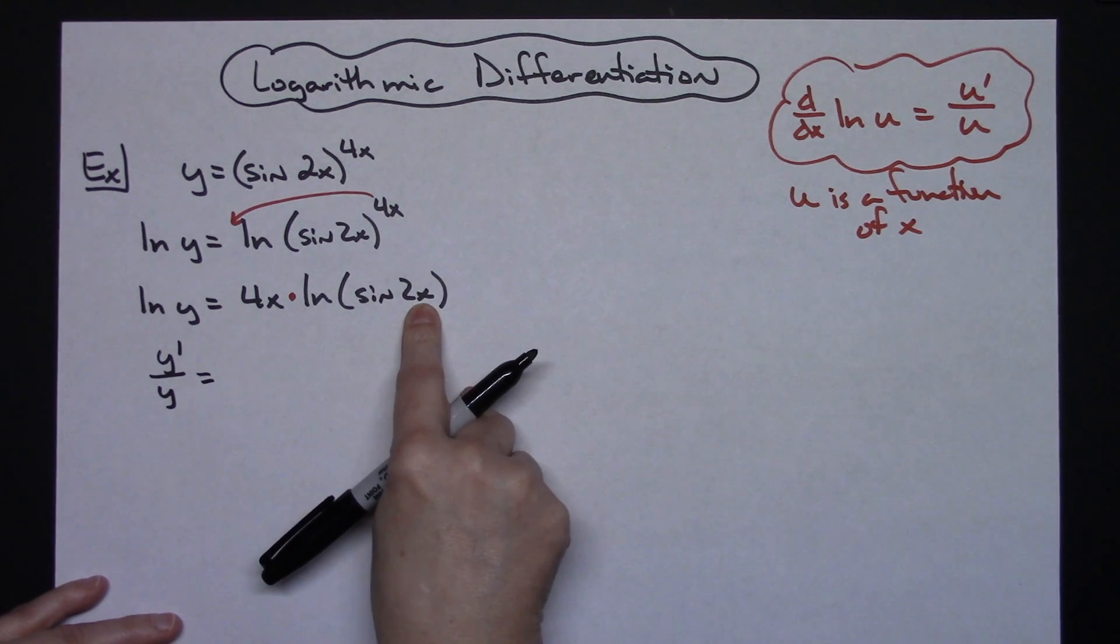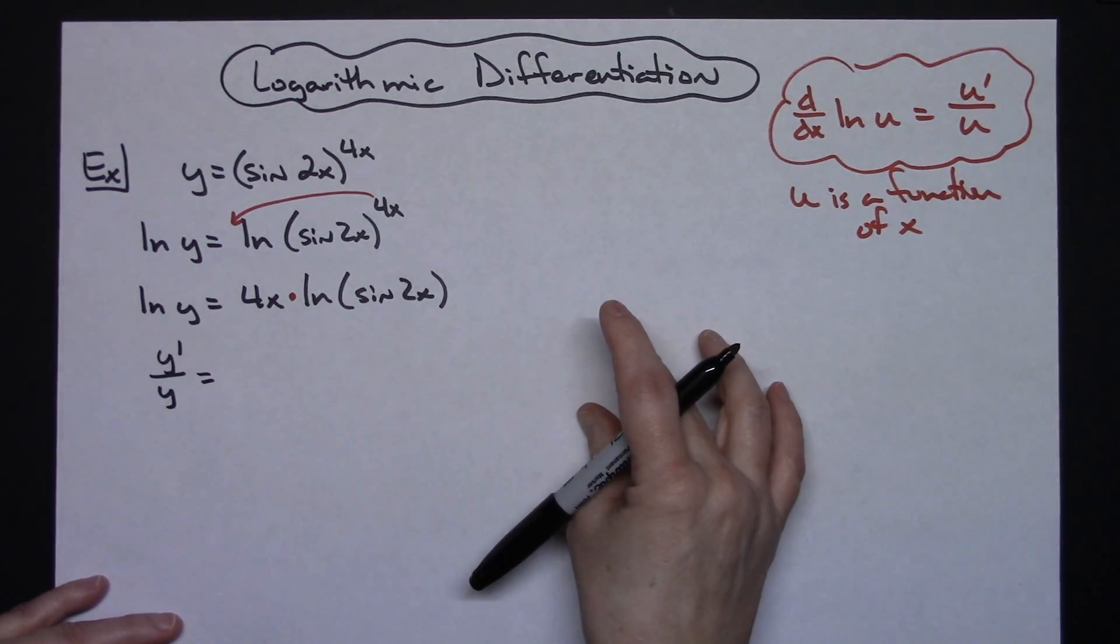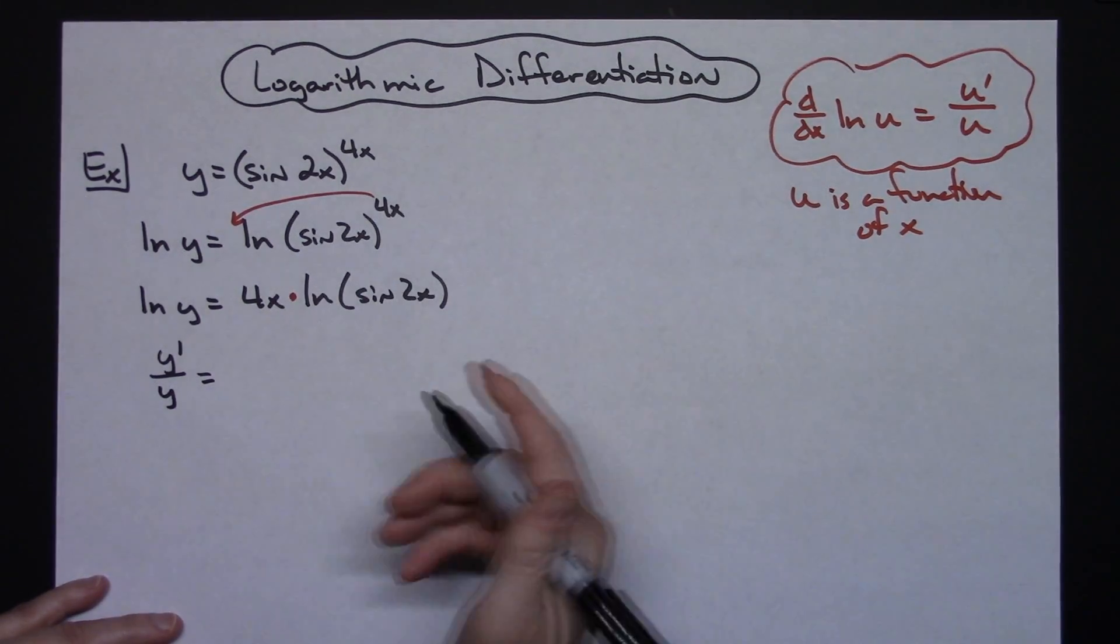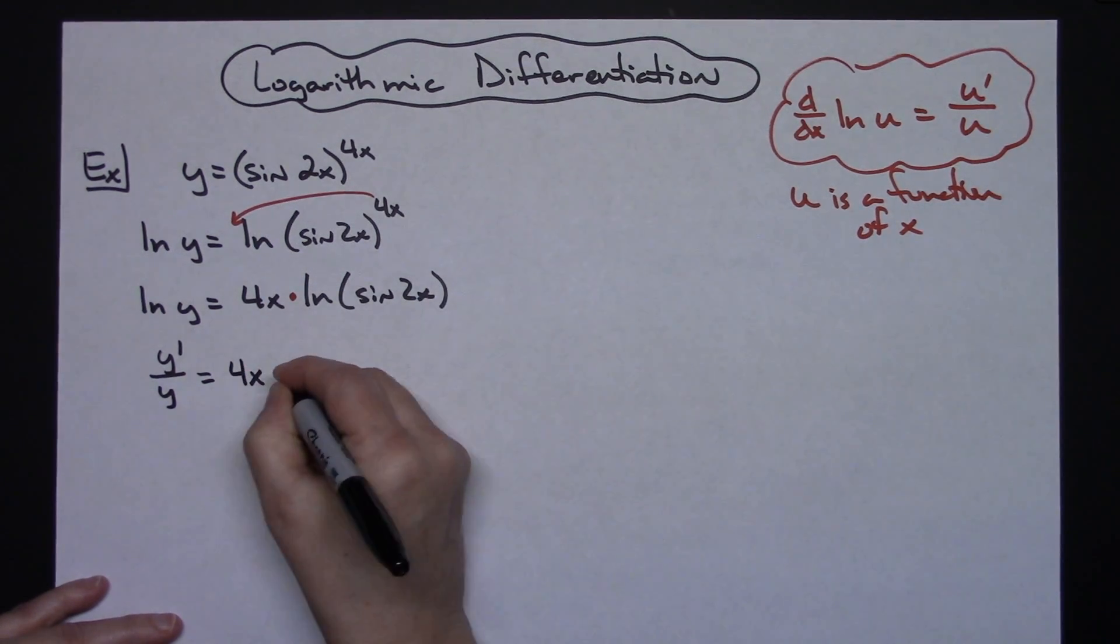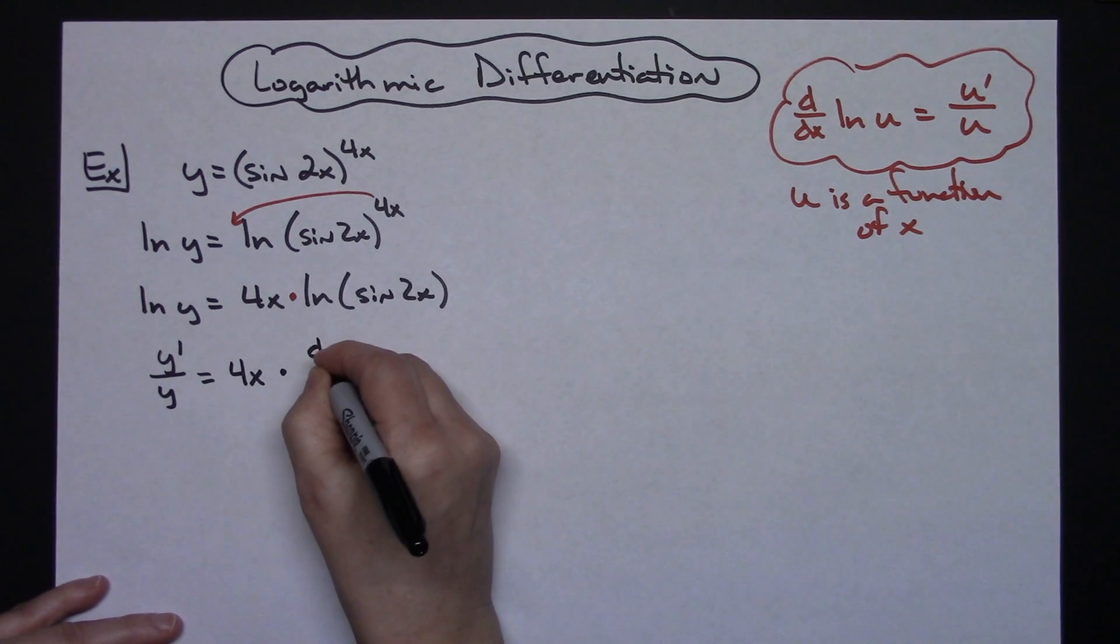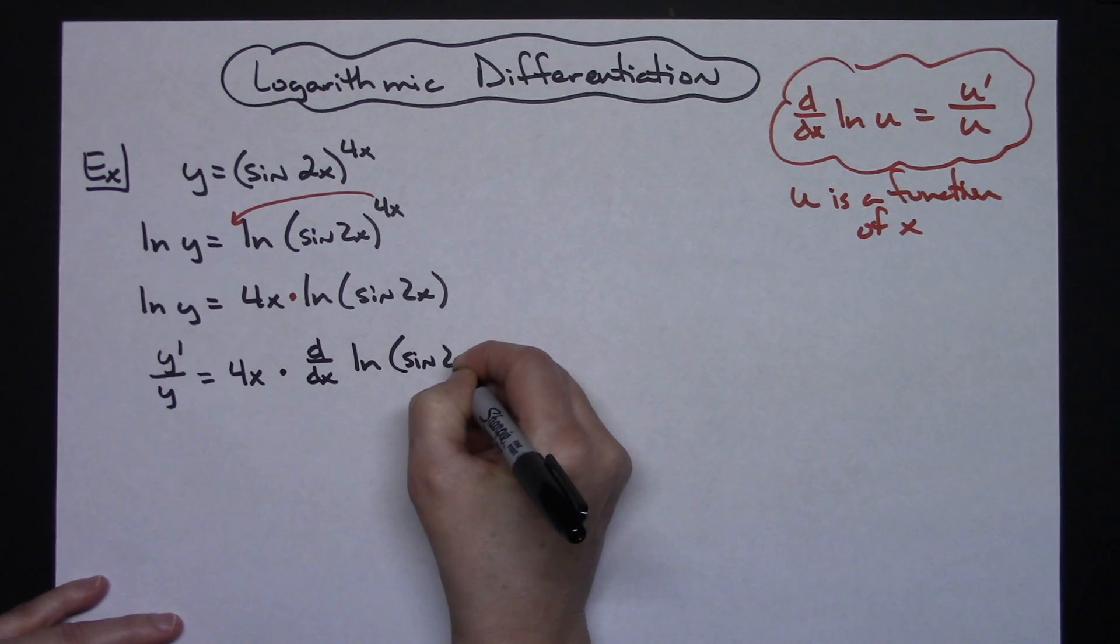This is going to be the product rule. So I'm going to go ahead and on this side use that d/dx notation before I actually take the derivative here. We'll have 4x times d/dx the derivative of that natural log of sine of 2x.